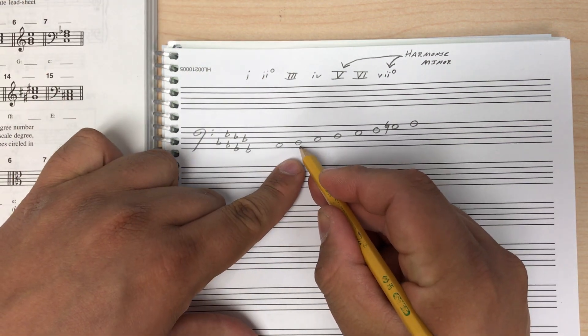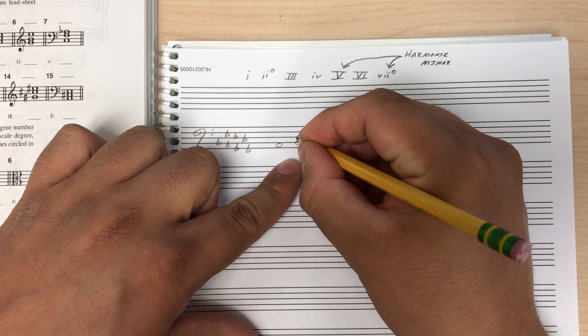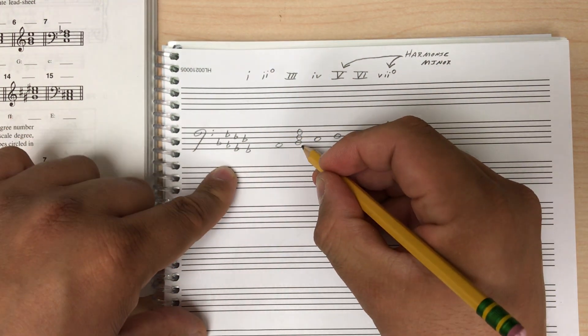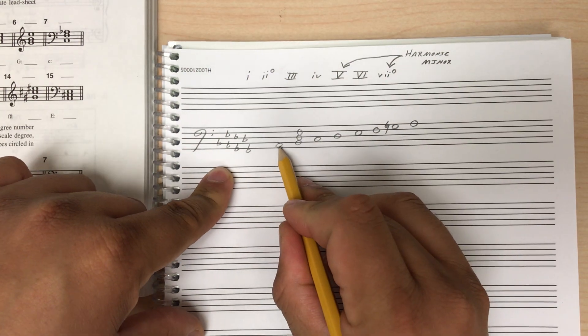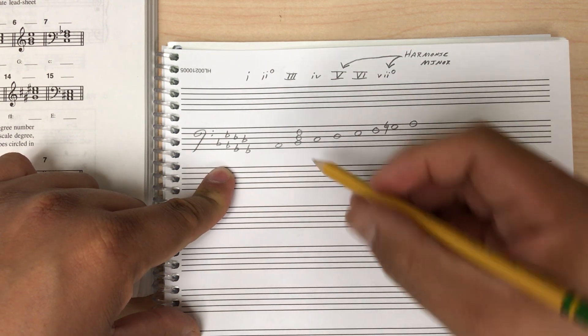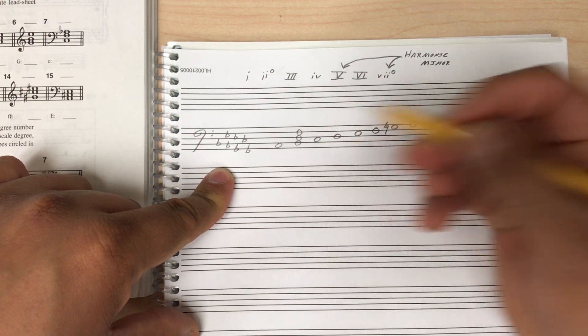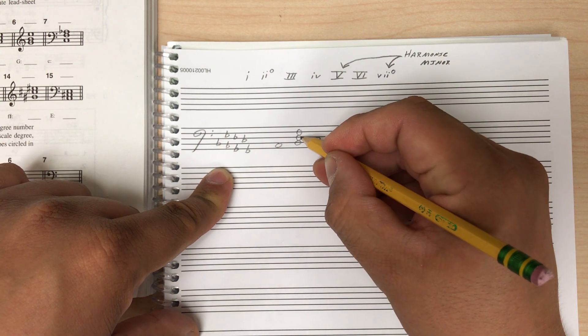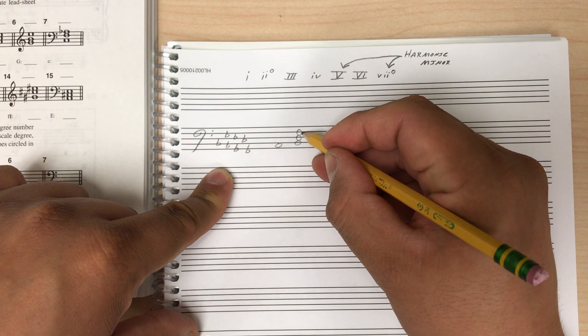and I want to spell a II chord. So the II chord is built on the second scale degree. So I know that the II chord, Ab Bb, is a Bb chord. And I know that if I use natural minor here, I'll wind up with a chord that has Bb, Db, and Fb.